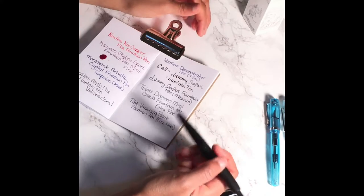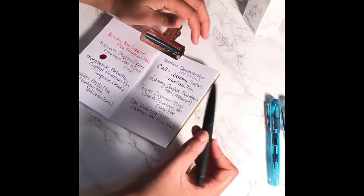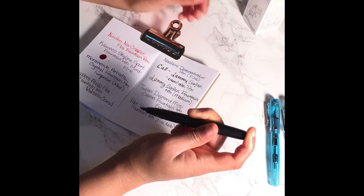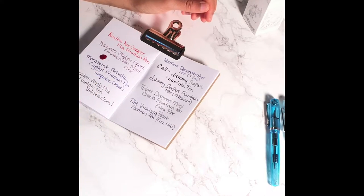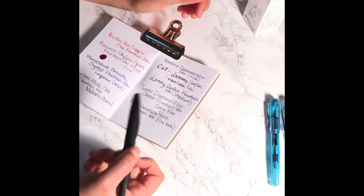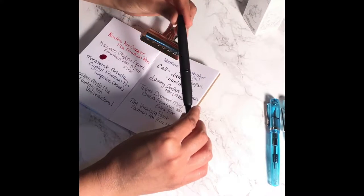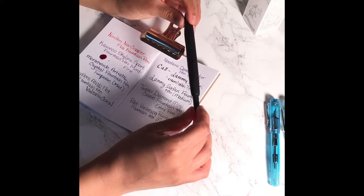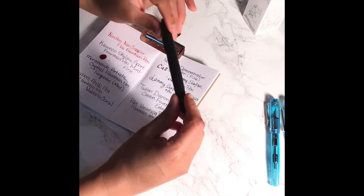I forgot to mention when comparing the extra fine to a fine nib, the Twisbi Diamond Mini writes probably a tad bit better than the Noodler's Nib Creeper for being an extra fine pen. Now this Pilot Vanishing Point writes very smooth for being a fine pen. I think even smoother than my Kaweco pen. It just has a nice expensive feel.